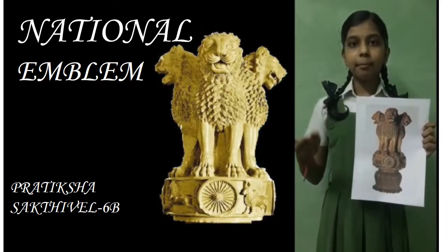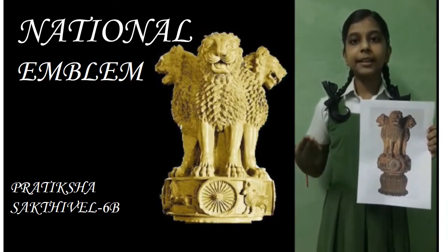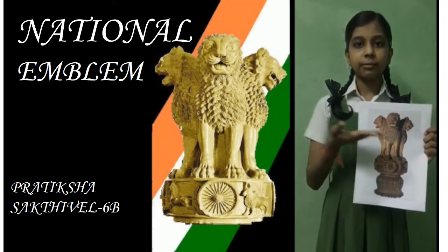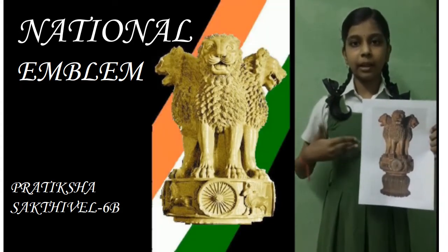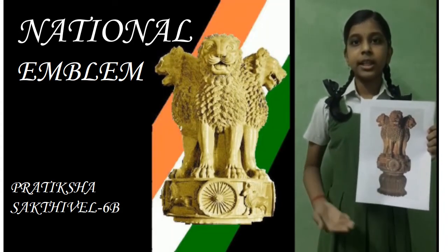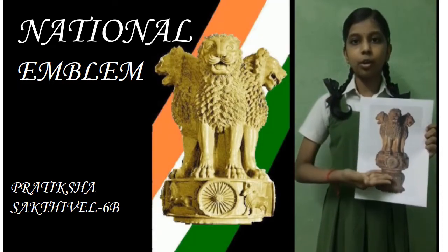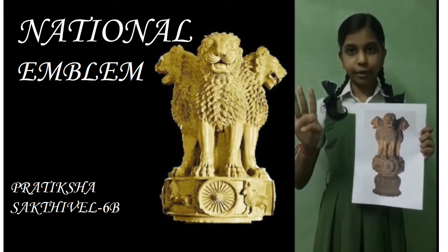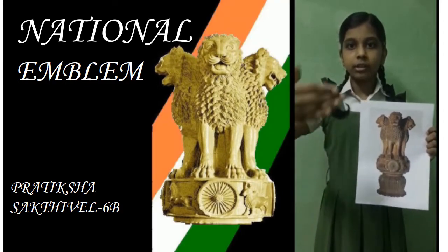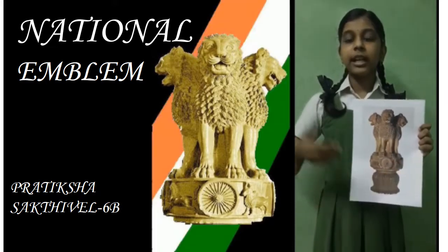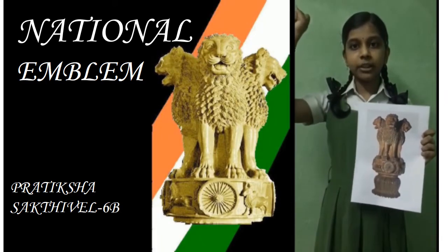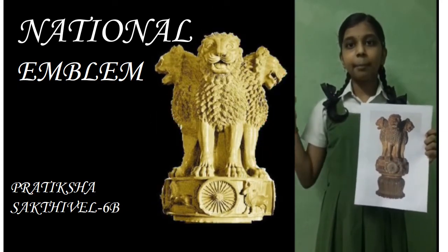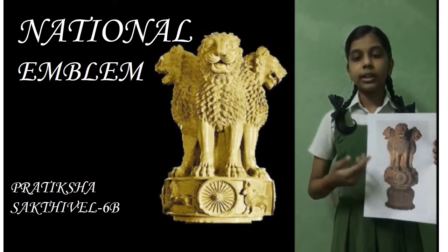The state emblem is an adoption from the Sarnath lion capital of Ashoka, which is near Varanasi in Uttar Pradesh. It has 4 Asiatic lions standing back to back on a circular abacus. It stands as a fully bloomed inverted lotus form. The 4 Asiatic lions face 4 different directions: North, South, East and West. The national motto is Satyameva Jayate, whose English translation is 'Truth alone triumphs.' The capital is crowned by the wheel of the law, the dharma chakra.